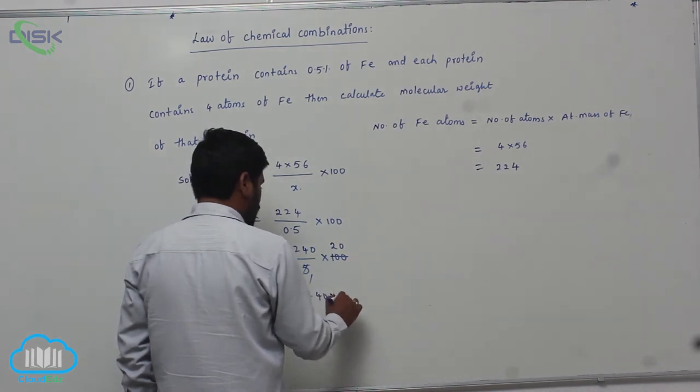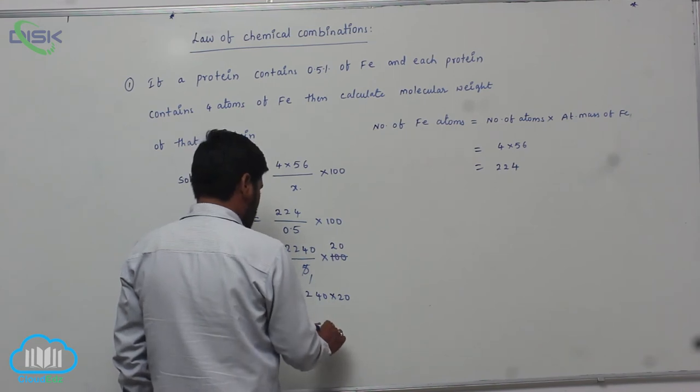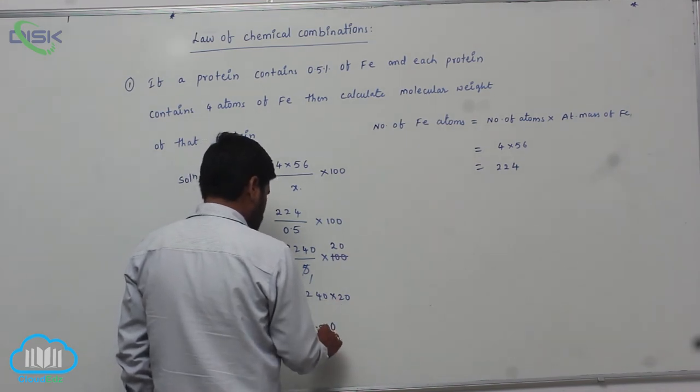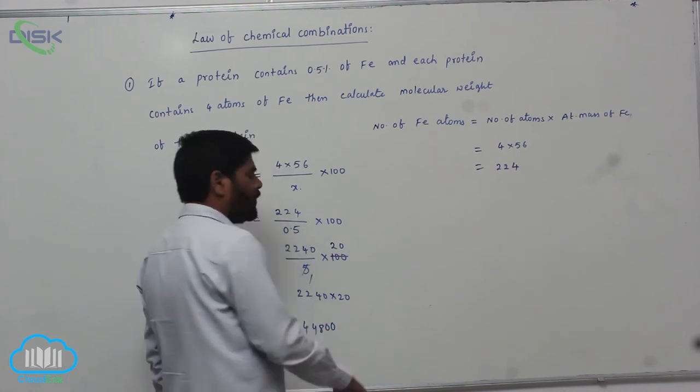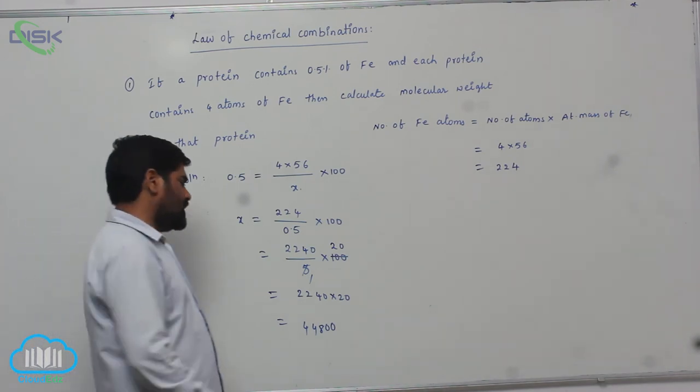2 zeros here, 8. Here is 4, here is also 4. So therefore 44,800.